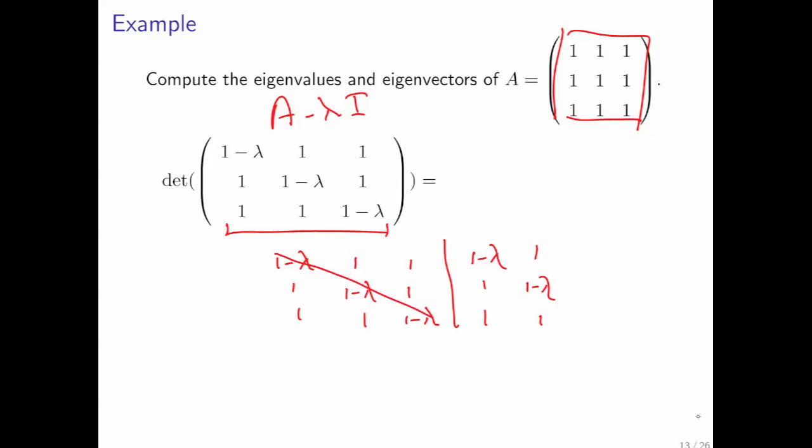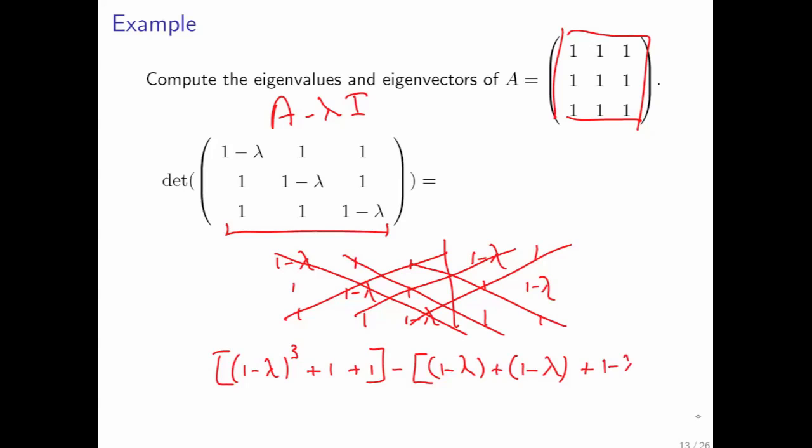And then what you want to do is multiply these together. That gives you 1 minus lambda to the third power. Multiply these together plus 1. Multiply these together plus 1. And then you want to subtract out. Multiply these together. You get 1 minus lambda. Add to that. Multiplying those together, you get another 1 minus lambda. Multiply these together. You get another 1 minus lambda.